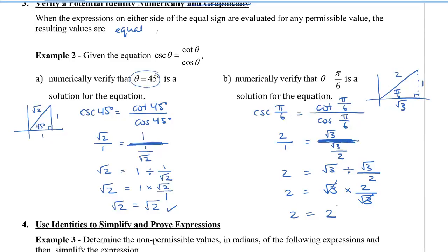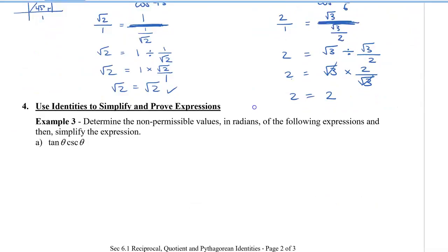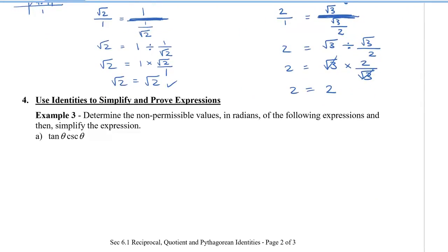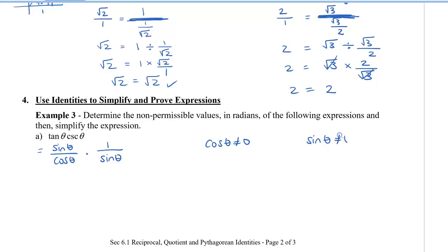We've verified, but we haven't proved the expression generally. So next, we're going to determine the non-permissible values in radians and simplify the expression. Let's rewrite using identities first: tan theta is the same as sine theta divided by cos theta, and cosecant theta is 1 divided by sine theta. When looking for non-permissible values, it's more convenient to write trig functions using sine and cosine so we can find NPVs using those graphs.